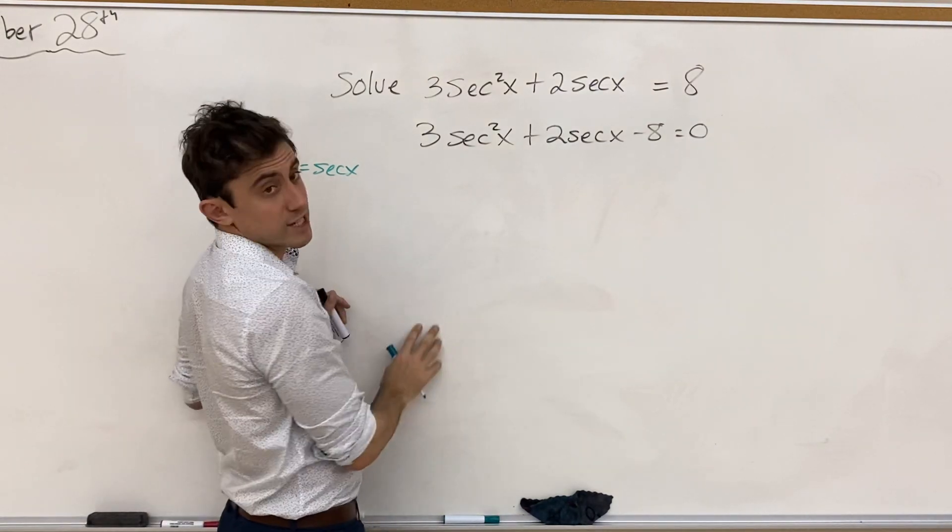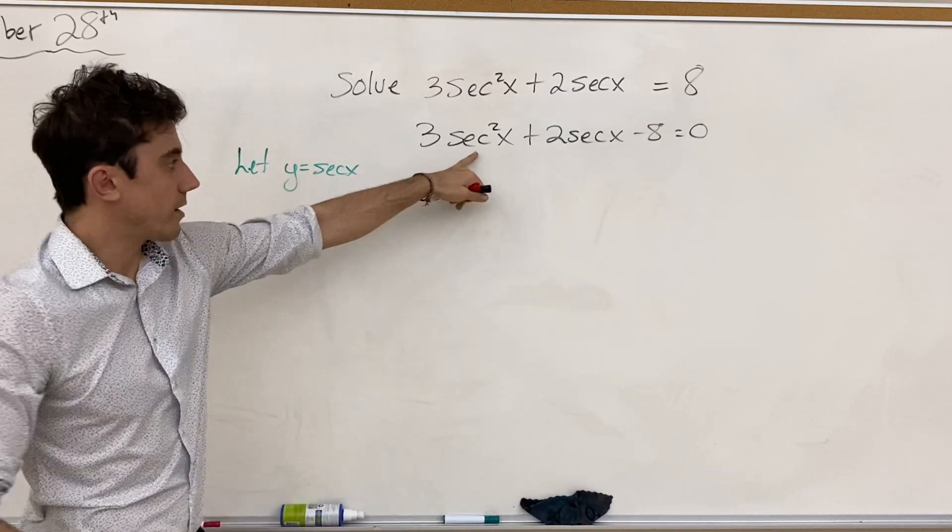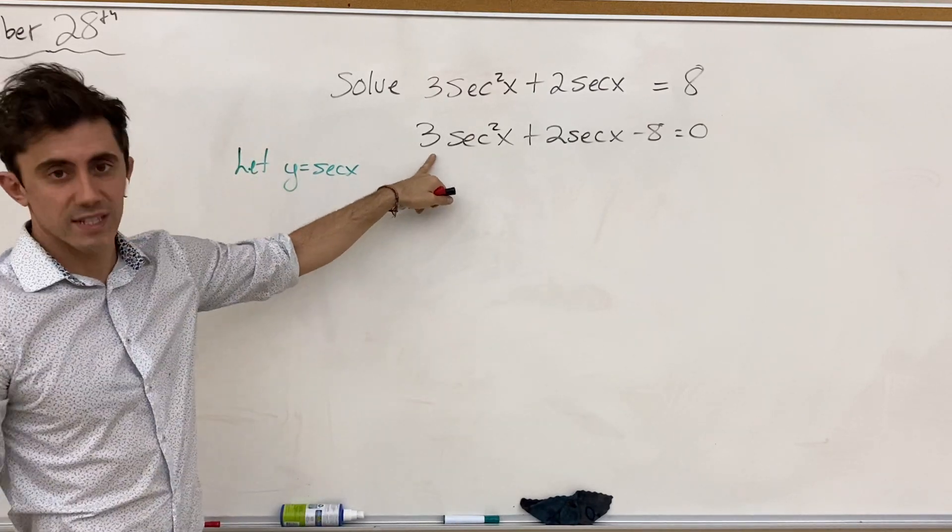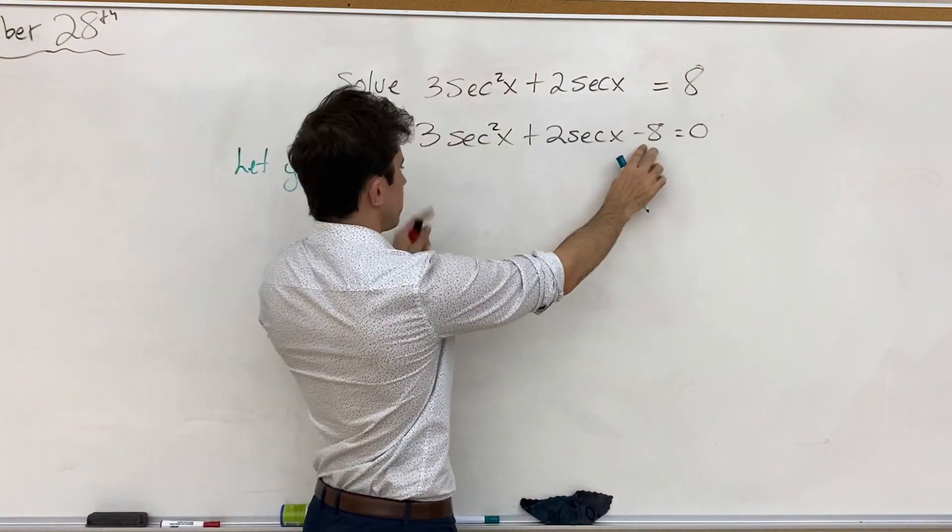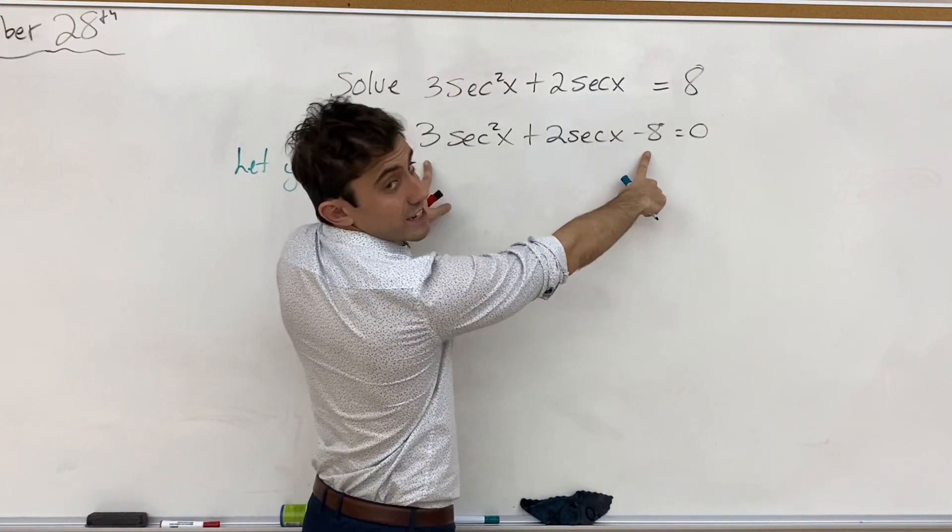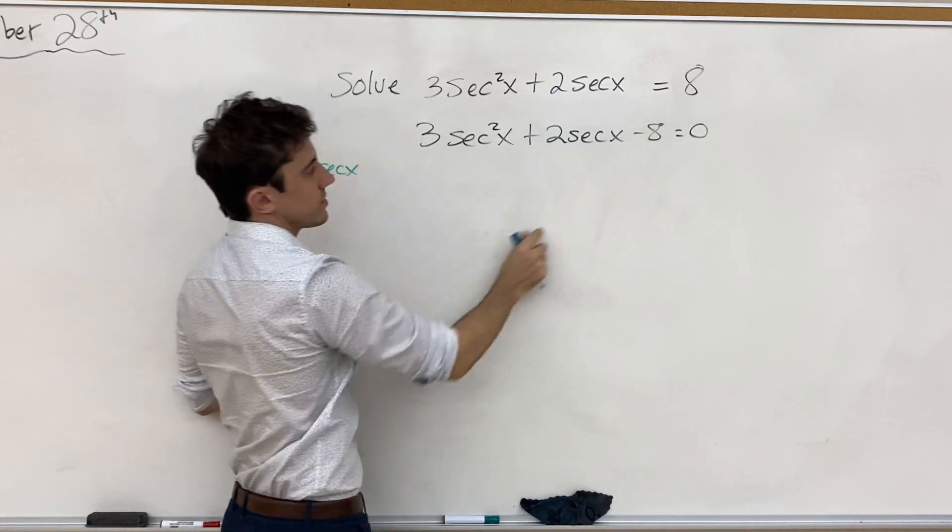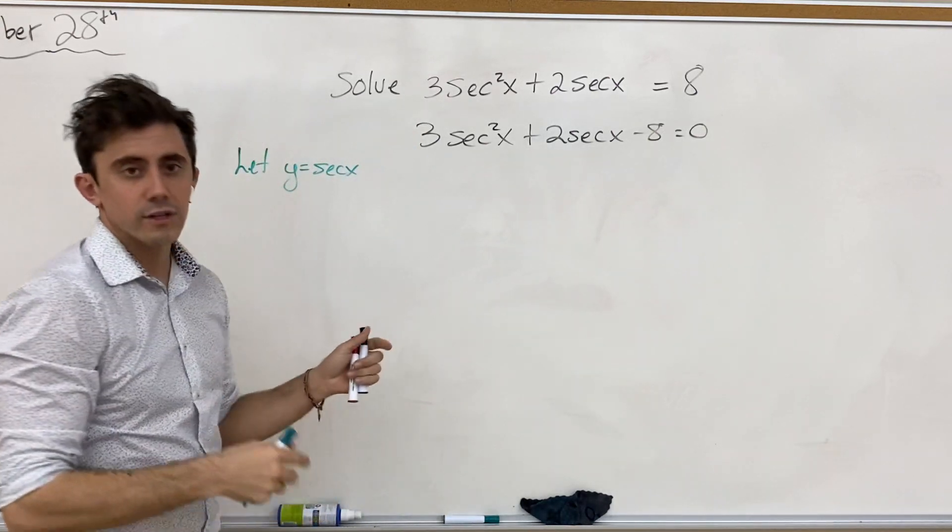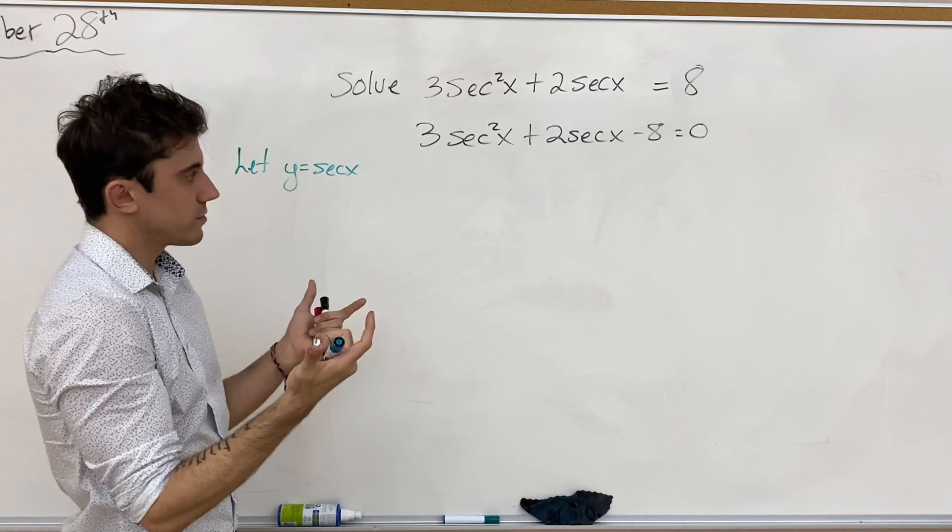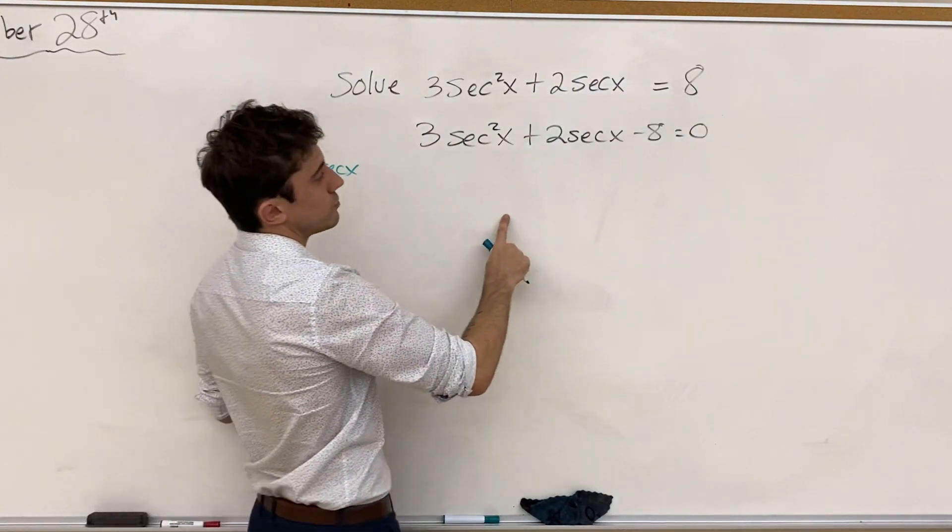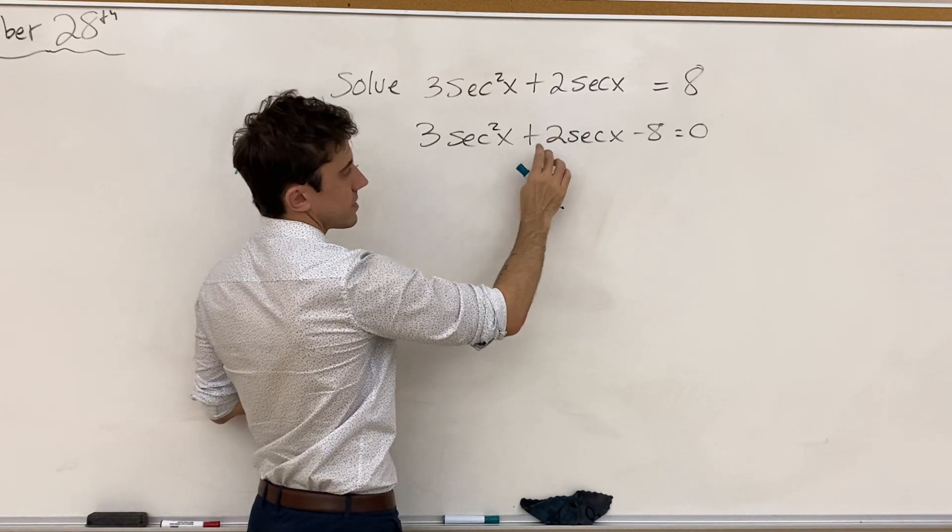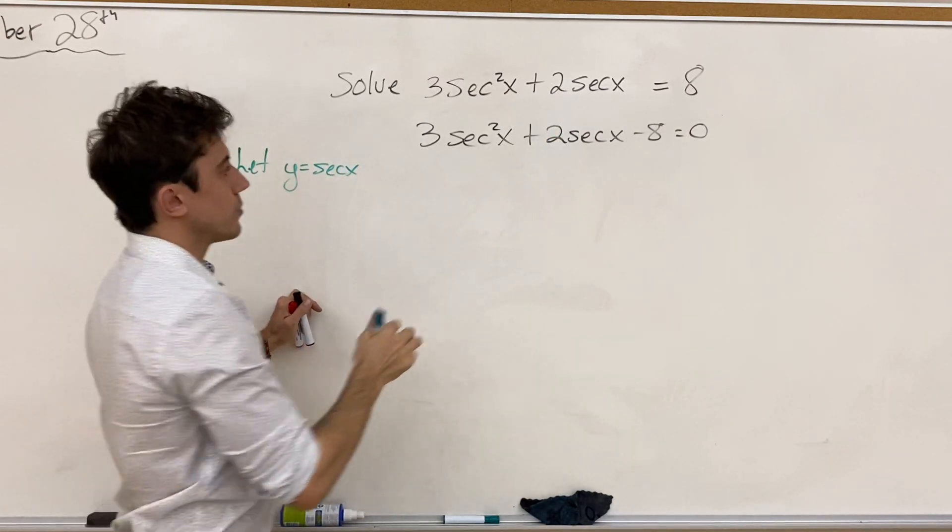So, we're going to use the decomposition method because we have a squared term coefficient that is not simply 1. And so we're thinking what two numbers multiply for a product of 3 times negative 8, which is negative 24, and simultaneously have a sum of positive 2. You can look at the factors of 24, and you'll come to the conclusion that those two numbers are positive 6 and negative 4.